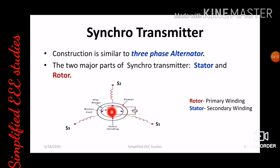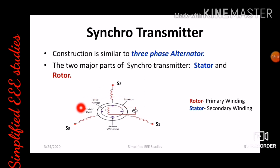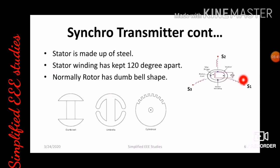The first component is the rotor coil, which is supplied by AC supply. The second component is the stator with stator windings S1, S2, and S3. Stator is made up of steel, which has a very low hysteresis value, so hysteresis loss will be minimized. The stator windings are kept 120 degrees apart — S1, S2, S3 are the stator windings, and those stator windings are kept 120 degrees apart, as is very clear from the diagram.